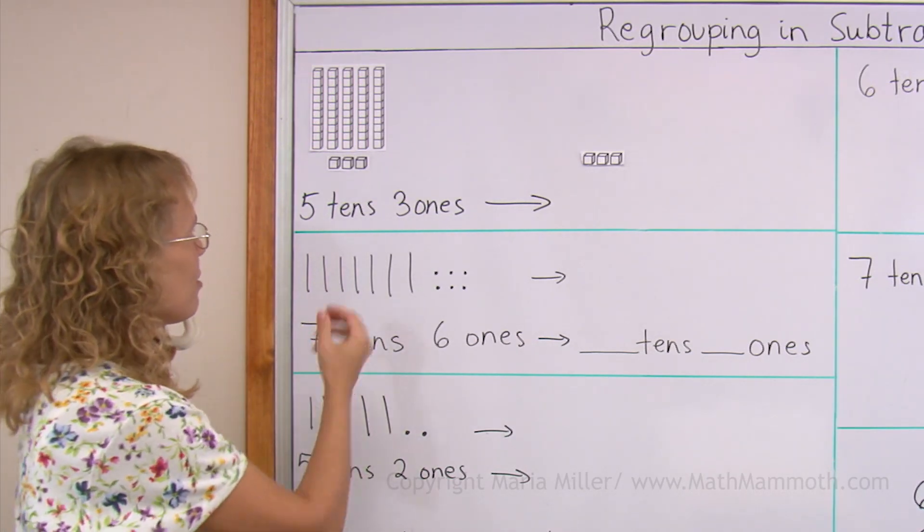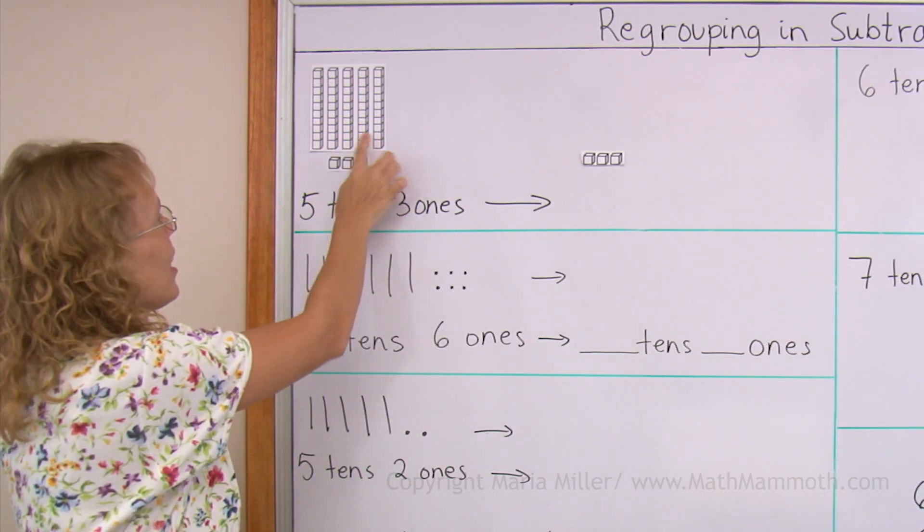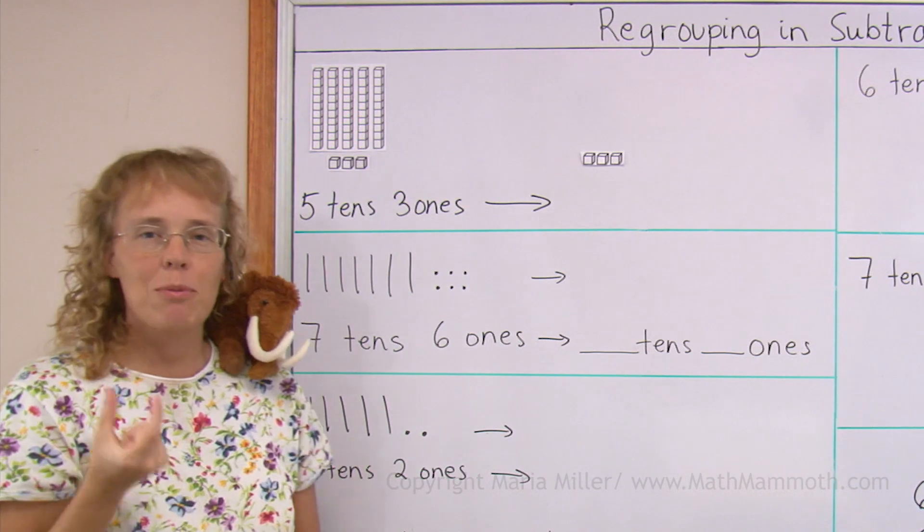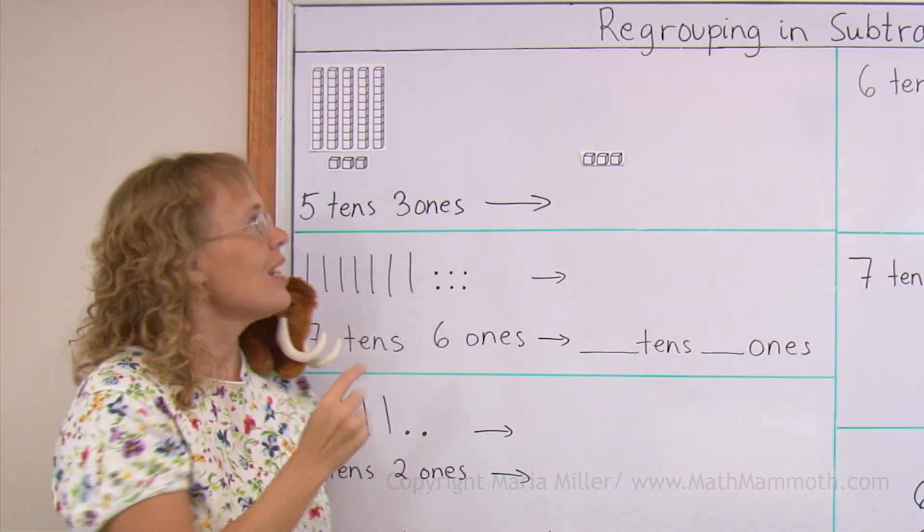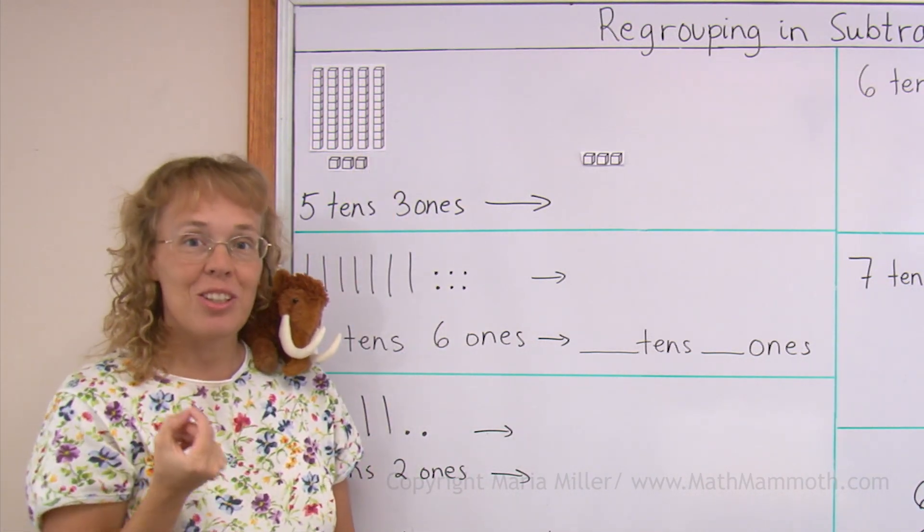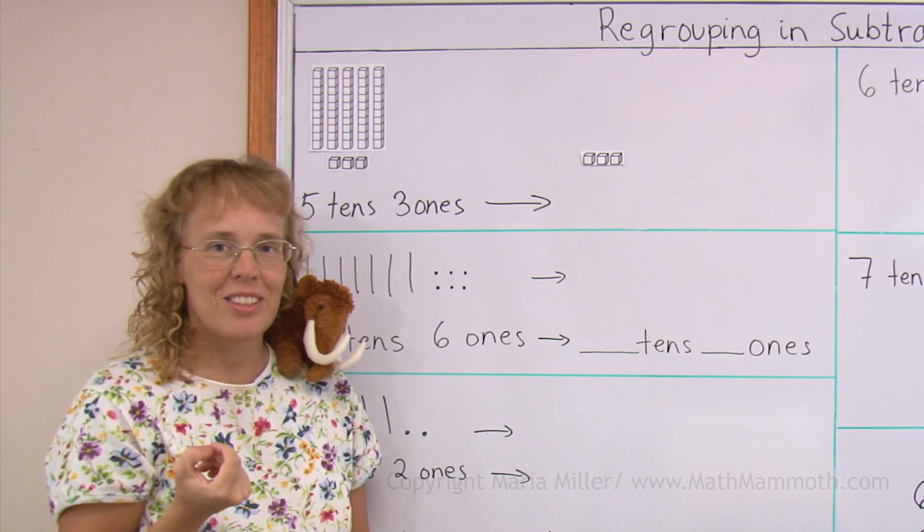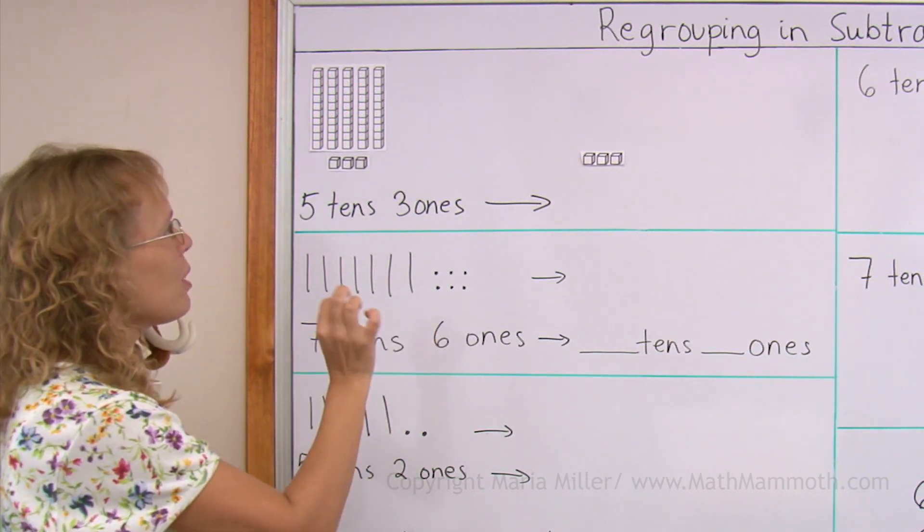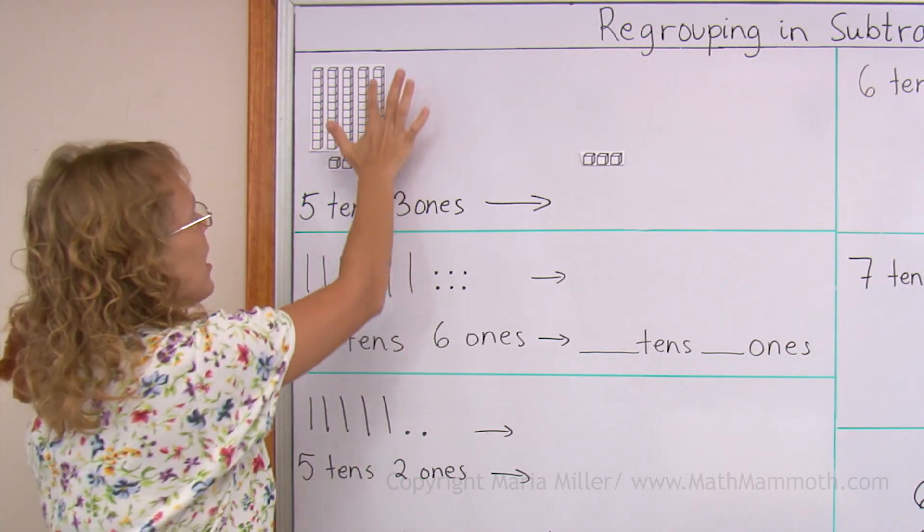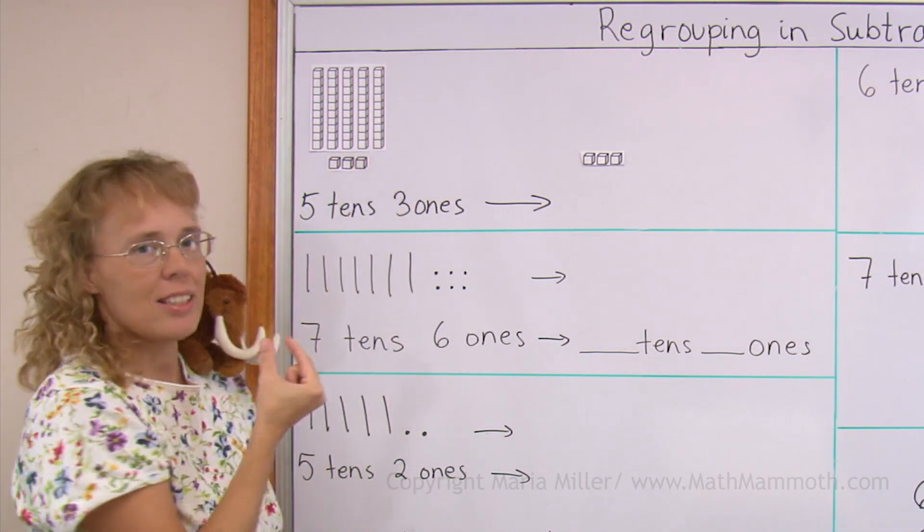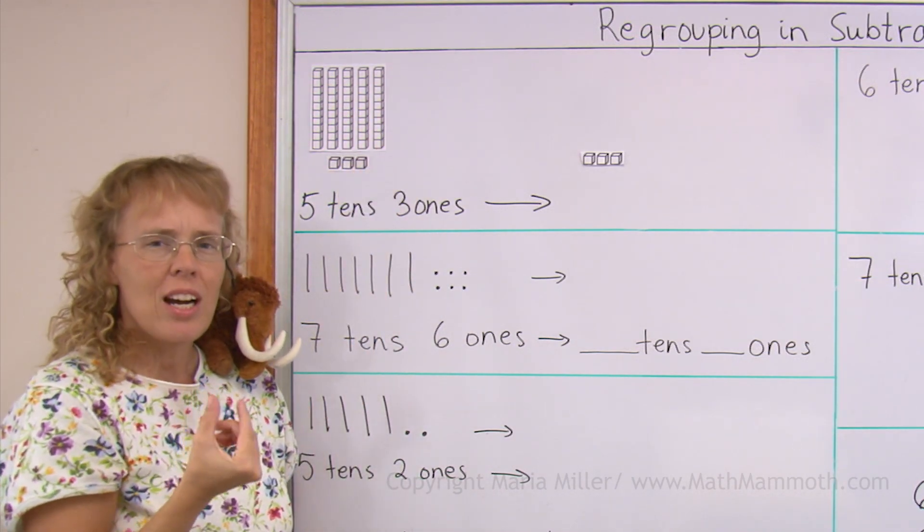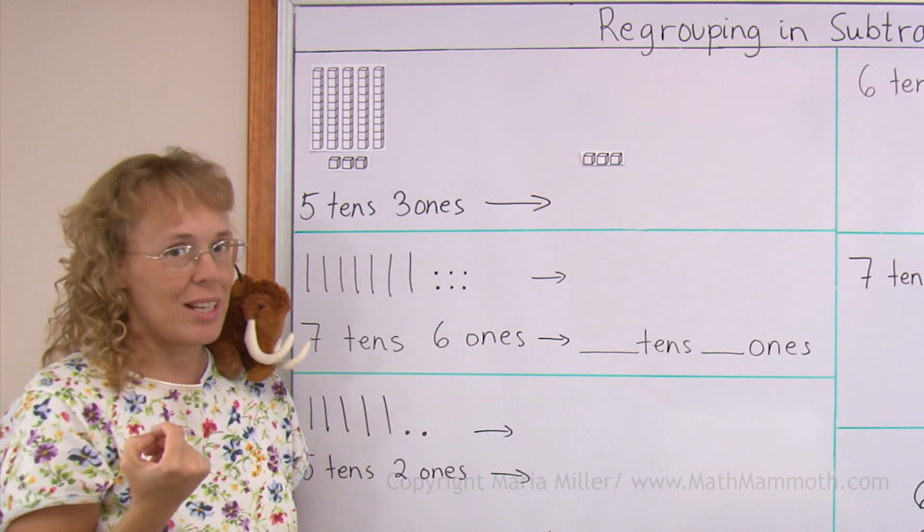The regrouping has to do with this. Let's say we have five tens and three ones. And I'm going to take one of those tens and break it into little cubes, into ones. Can you see what we will have after that? If I take this here and break it into little cubes, how many tens will we have after that and how many ones?